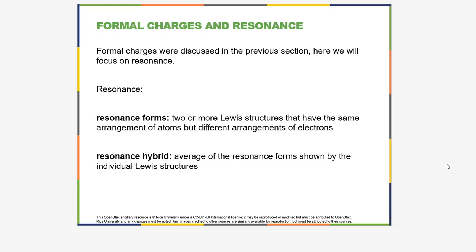In the last section we focused on Lewis structures, and here we're going to extrapolate a little bit to formal charges and resonance. We talked quite a bit about formal charges in the previous section, so in this section we'll focus just on resonance, even though how to calculate formal charge is shown in this section of the book. Note that they're using the mathematical formula for formal charge as opposed to the counting method shown in the previous video. These are exactly the same thing, so you can use either one, but it's easier to just use the counting method to determine whether something has a positive, negative, or neutral formal charge.